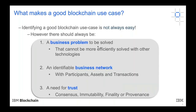We have a couple of pragmatic tests for a blockchain solution. First, it must have a business problem that ideally cannot be solved with just a database — if a normal database can address it, you don't need blockchain. Second, there must be an identifiable business network including participants, assets, and transactions. Third, there must be a need of trust — encompassing consensus among all participants, immutability so records cannot be changed once entered, finality so records cannot be taken back, and provenance to know the history of a given asset over time. These three pragmatic tests determine whether blockchain is the right approach.